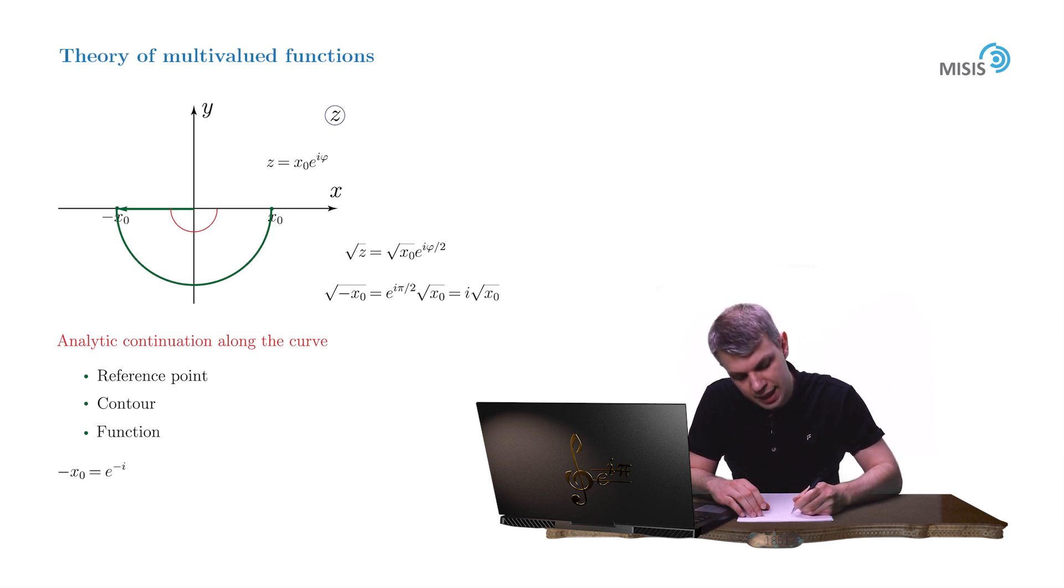It's e^(-iπ) times x₀. So the square root of this number is e^(-iπ/2) times the square root of x₀, which is -i times the square root of x₀. It's a different value.